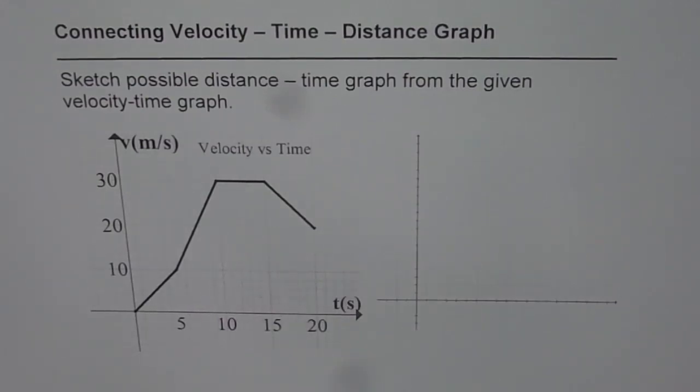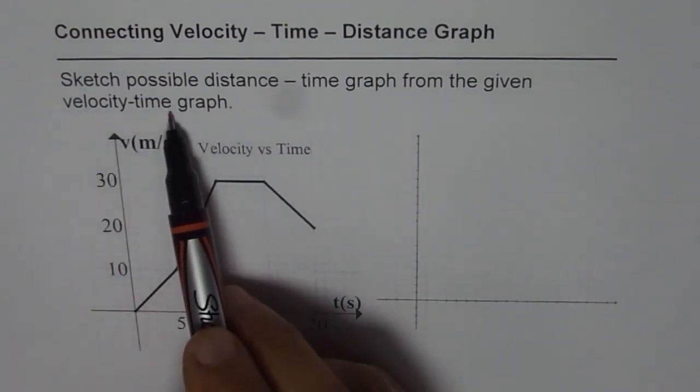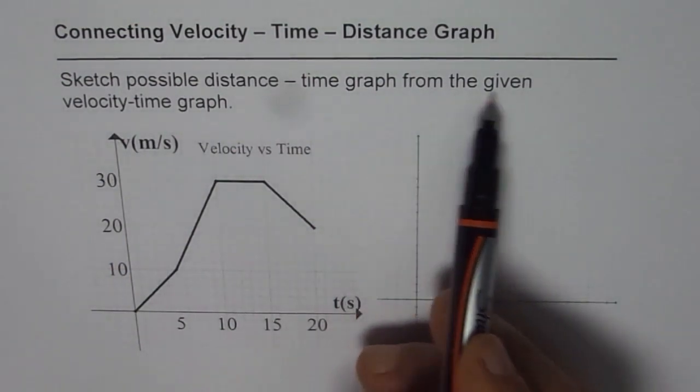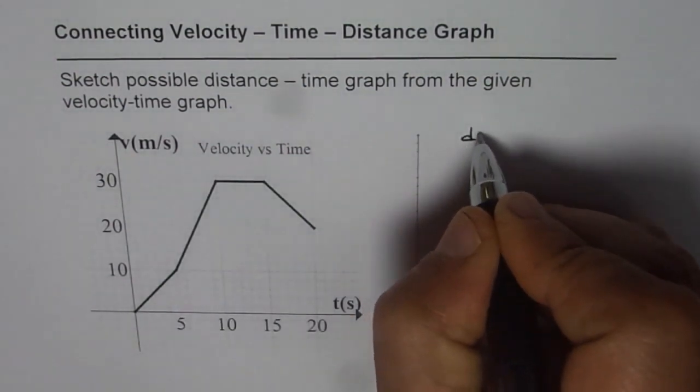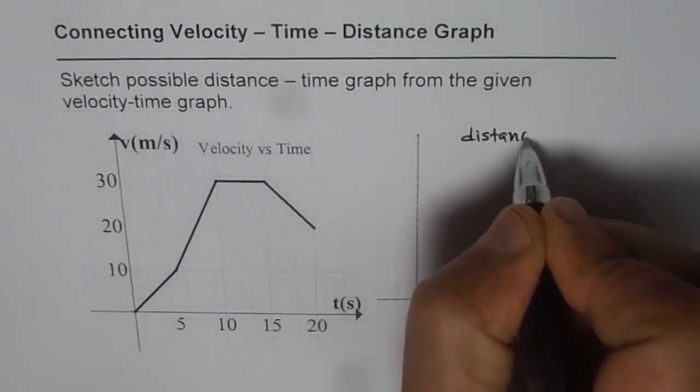I am Anil Kumar and now let us learn how we can get information from velocity time graph and translate it into a distance time graph. The question here is sketch possible distance time graph from the given velocity time graph. So we have a velocity time graph here where time is in seconds and velocity is in meters per second. Now we need to develop or sketch a distance time graph from the given graph.